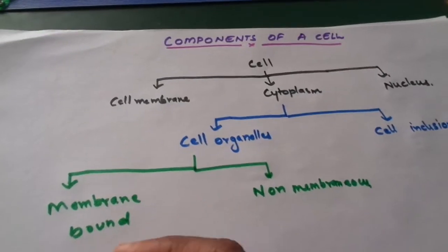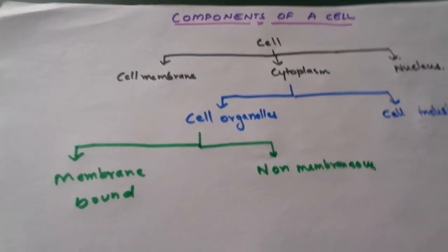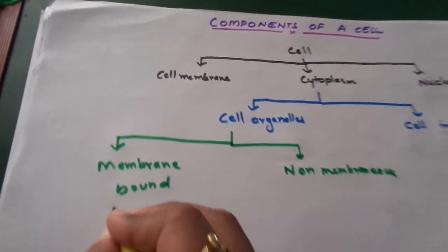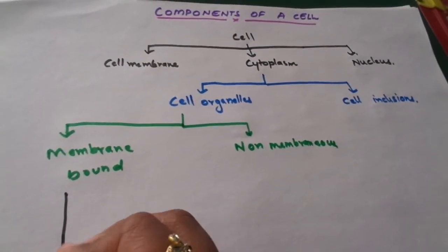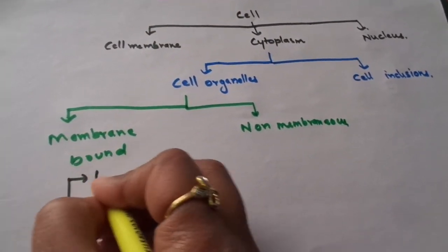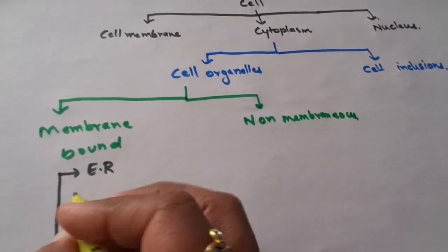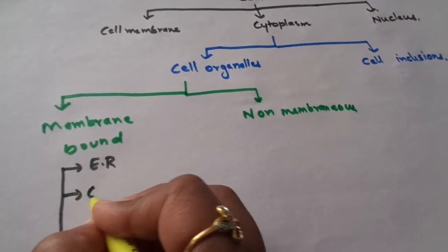The membrane bound are first endoplasmic reticulum, next is golgi complex.